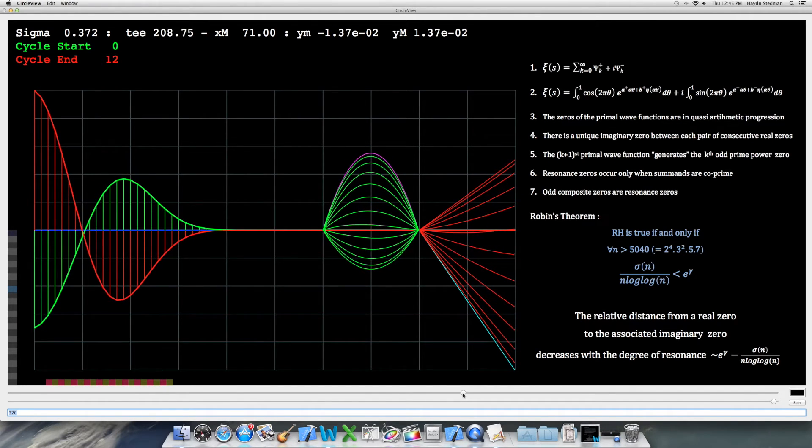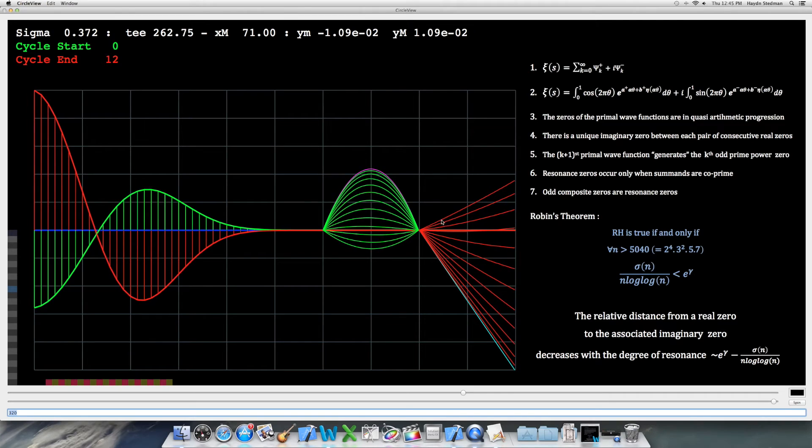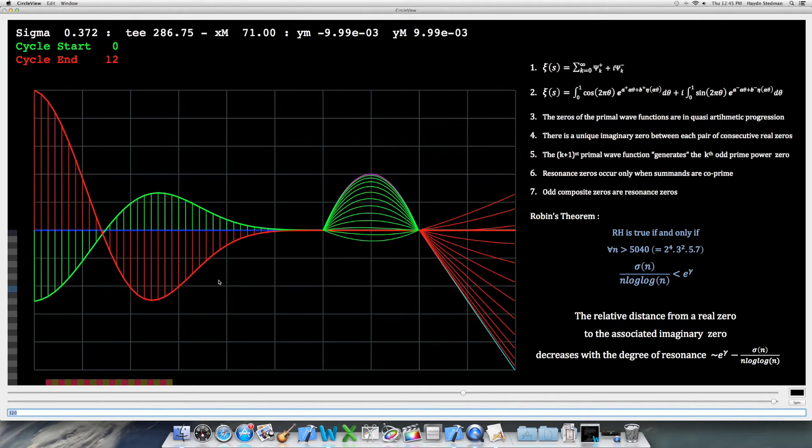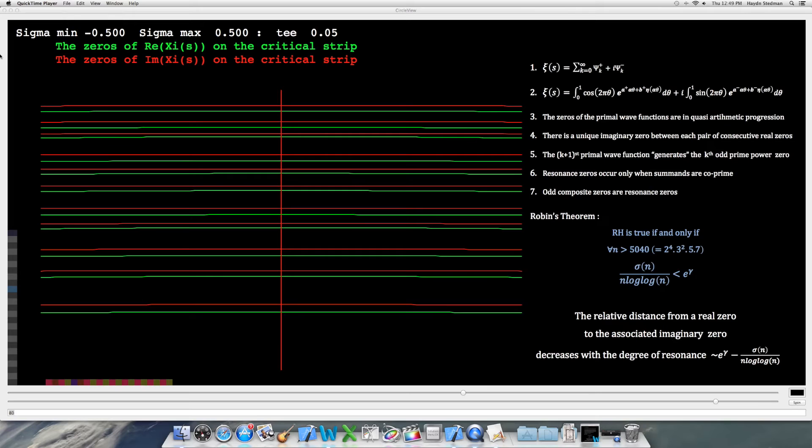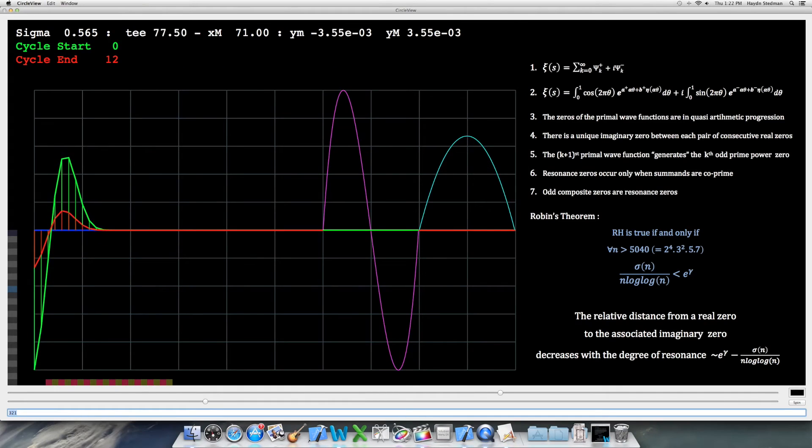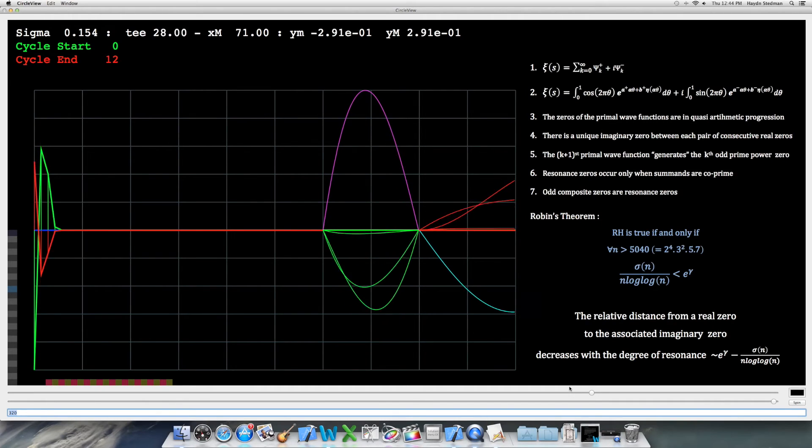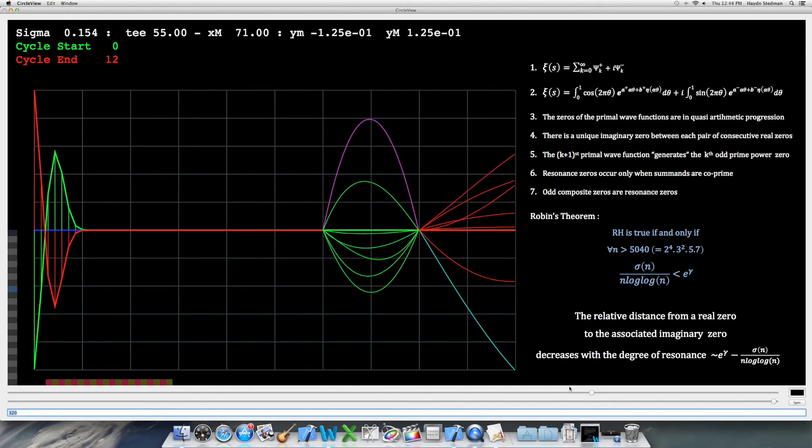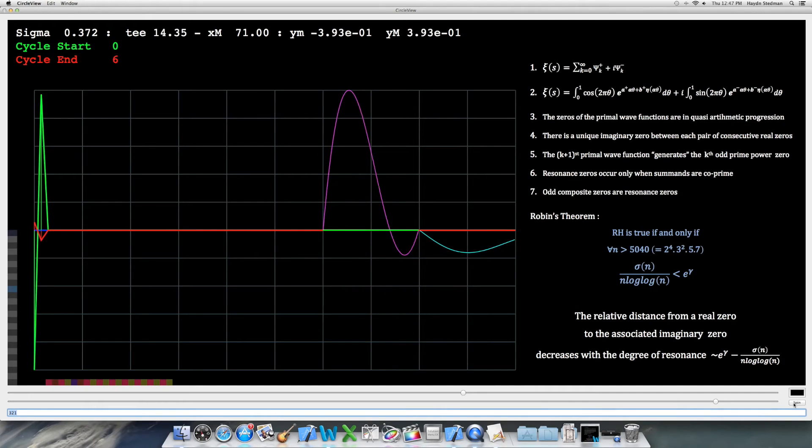We also note that the individual primal wave functions have zeros which are in quasi-arithmetic progression. And that every real zero has an imaginary zero associated with it, which follows it closely and occurs before the next real zero. The k plus first primal wave function generates the kth odd prime power. The issue of the resident zeros is very interesting. All odd composite numbers are represented by resident zeros.